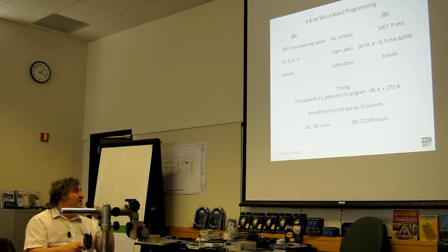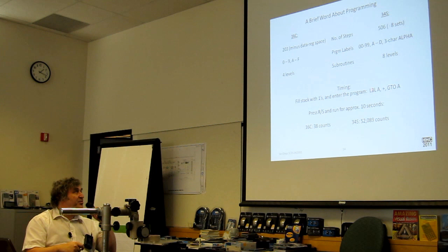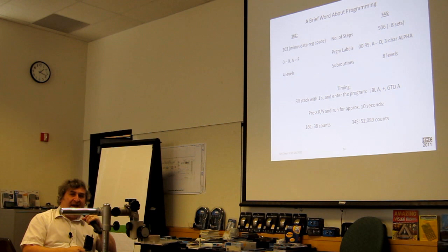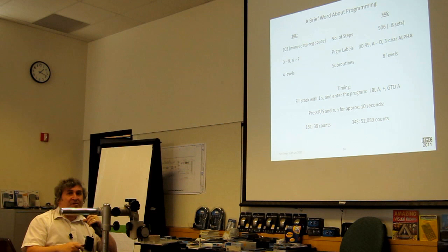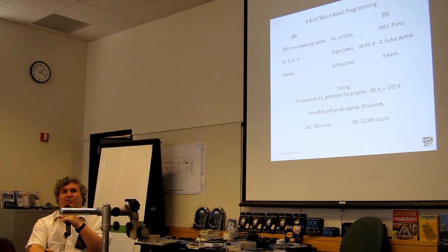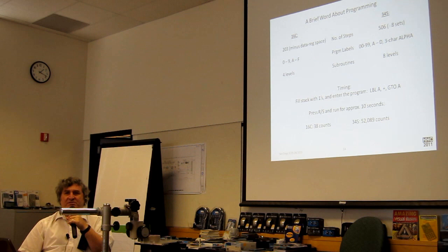And just a snippet of timing. If you fill the stack with ones and write the program label A plus go to A. You press run stop for 10 seconds. The 16C gives you 38 counts. The 34S gives you 52,000 counts. There's about a 1,300 to 1 difference, at least in this example. With the IEEE floating point program, I wrote it in both. On the 16, it took between 8 and 10 seconds on average with running in this way. The 34S, you press it and get the answer. So, it's quite impressive. It's impressive progress.